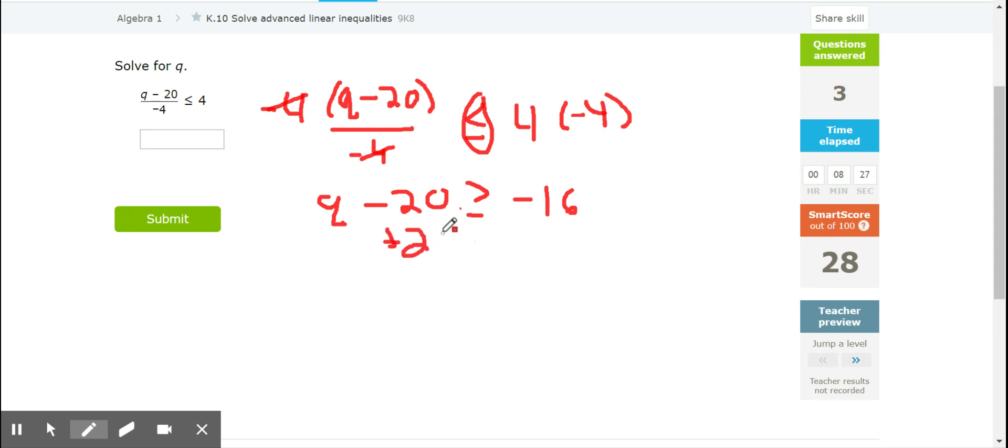Now, the Q minus 20 is all by itself. We can just add 20 to both sides, and Q is greater than or equal to 4. Switch back to the pointer. Q is greater than or equal to 4.